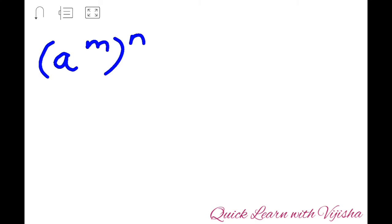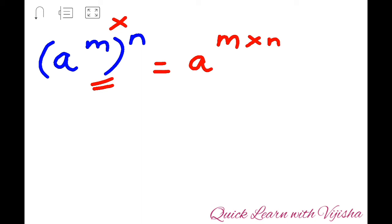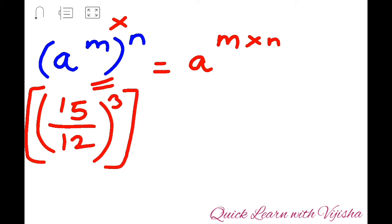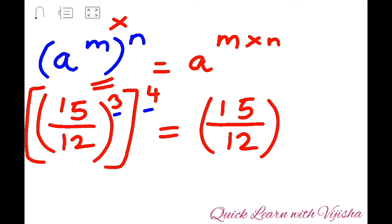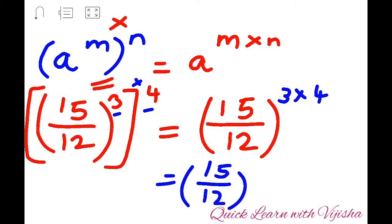The next indices form is a raised to m, raised to n. If a question comes in this form, your answer is a raised to (m × n), because in algebraic expressions a bracket means multiplication. So you multiply the indices. For example: (15/12) raised to 3, all raised to 4. There is only one base and two indices with a bracket, so we multiply: 3 into 4 equals 12. The answer is (15/12) raised to 12.